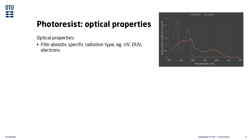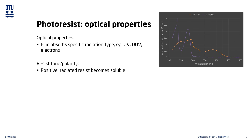The reality is that there are many more interesting details to the resist than simply the spectral sensitivity, but they are unfortunately beyond the scope of this lecture. Each resist also has what is called a tone, or polarity, which defines what happens to the resist when it is exposed to radiation. In a positive-tone resist, the exposed areas will become more soluble, which means that these parts will be etched away in the development step. The negative-tone resist is the opposite — the exposed areas become less soluble and will be the parts that remain after the development step.